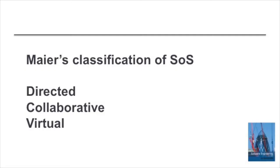I'm Ian Somerville and in this video the topic is going to be the classification of systems of systems, a discussion of the different types of system of systems which can be created. The first person to talk about this was a systems of systems engineer called Meyer and he classified systems into three categories: directed systems of systems, collaborative systems of systems, and virtual systems of systems.